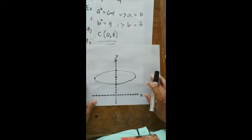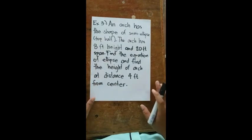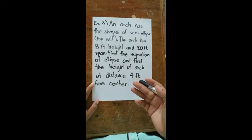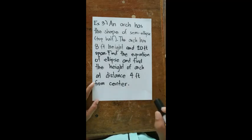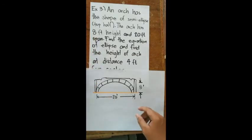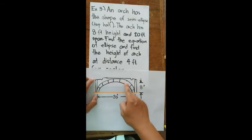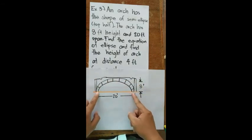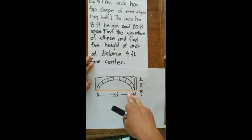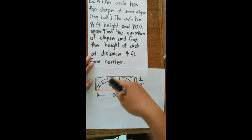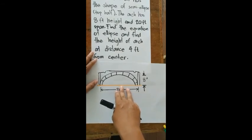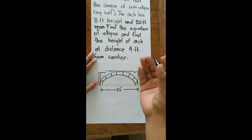Our last example is a word problem. An arch has the shape of a semi-ellipse (top half of an ellipse). The arch has a height of 8 feet and a span of 20 feet. We need to find the equation of the ellipse and the height of the arch at a distance of 4 feet from the center. Since it's the top half, this is a horizontal ellipse, and we assume the center is at the origin.